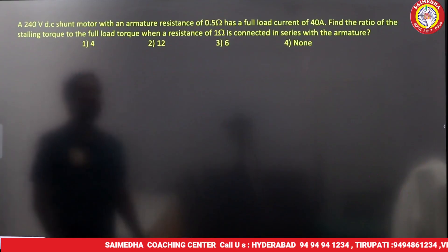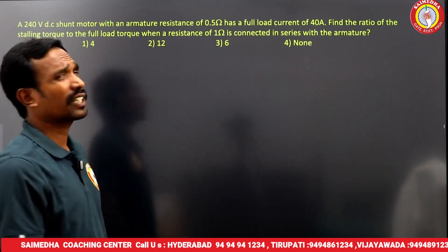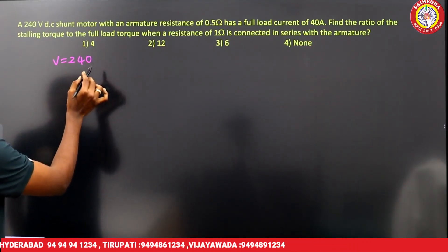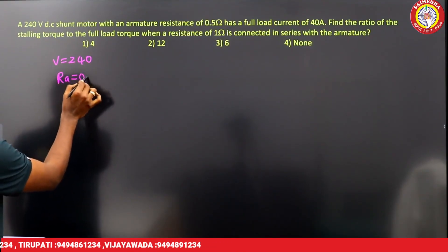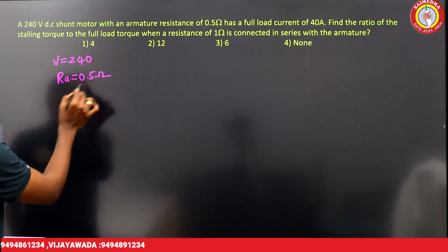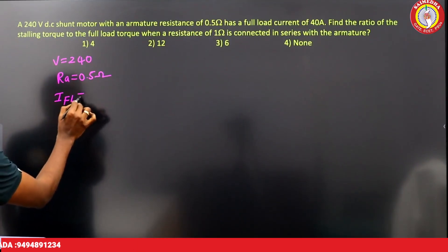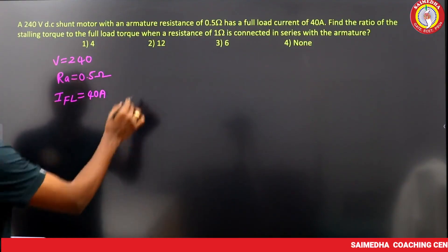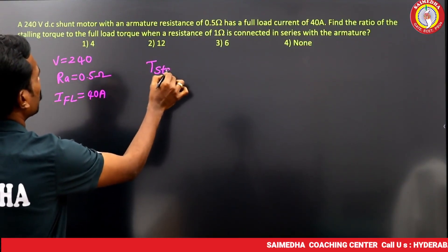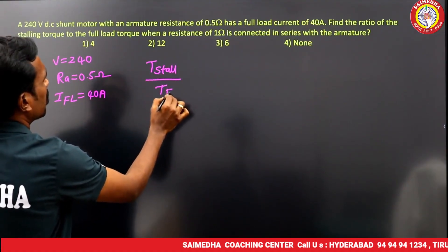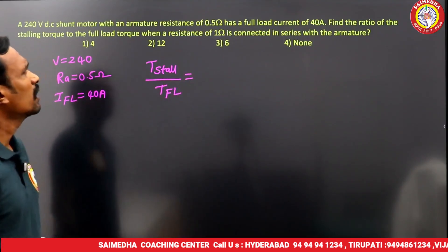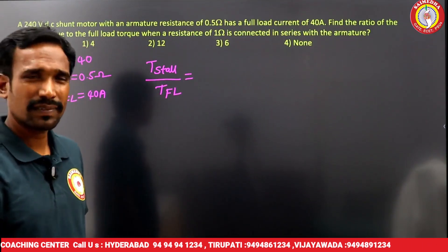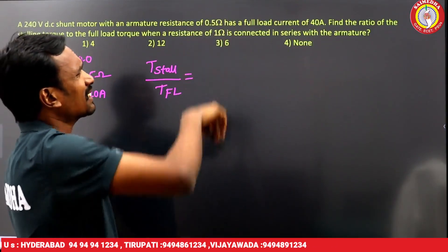Next question: a 240-volt DC shunt motor with armature resistance 0.5 ohms and full load current of 40 amperes. Find the ratio of stalling torque to full load torque when a resistance of 1 ohm is connected in series.